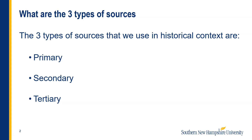There are three different types of sources that we use in historical context, and those are primary, secondary, and tertiary. It is important to understand the difference between the sources, because in history we need different sources to help us illustrate different things.